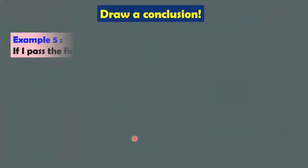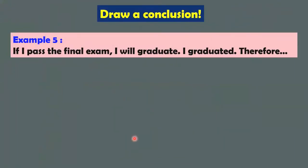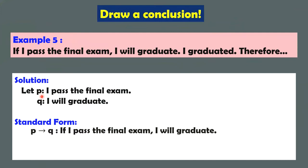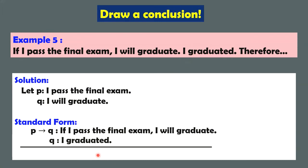So it's just a matter of pattern — all you have to do is familiarize yourself with the different valid argument forms. Let's have this last example. 'If I pass the final exam, I will graduate. I graduated. Therefore...' Using these two propositions in standard form: the first premise is a conditional statement — if I pass the final exam, I will graduate — so if P then Q. The second premise: I graduated, so we have Q. Now, many students would say the conclusion is: I passed the final exam. The question is, is this really the valid conclusion?